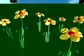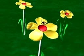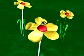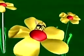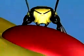Bees make honey because it provides an important food source for them. In order to produce honey, bees must gather a sweet liquid called nectar from flowers. A worker bee flies to a flower and sucks up the nectar with its long tongue.